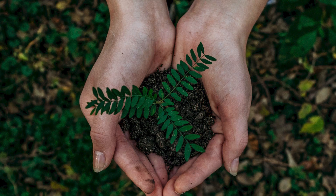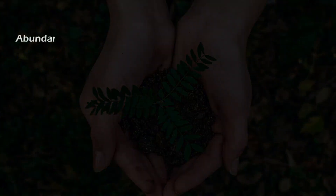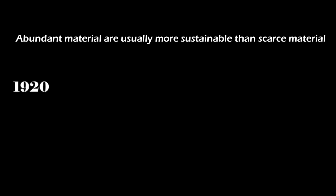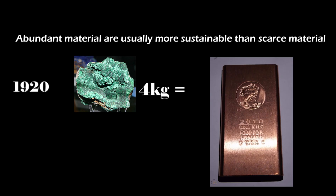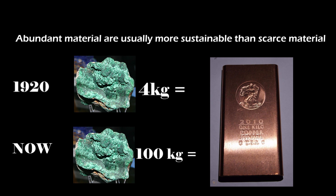When looking for sustainable material, the first step is to know where the ecological impact comes from. Here are some guidelines. First, abundant materials are usually more sustainable than scarce materials. For example, in 1920 we needed to dig 4 kg of ore to get 1 kg of copper, but now we need to dig 100 kg of ore to get the same amount of copper, and the rest — 99 kg — goes into waste, and this data keeps changing.